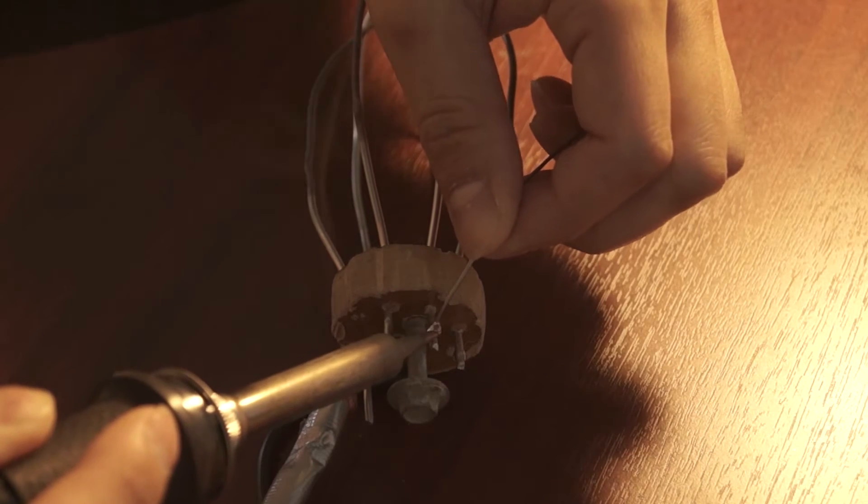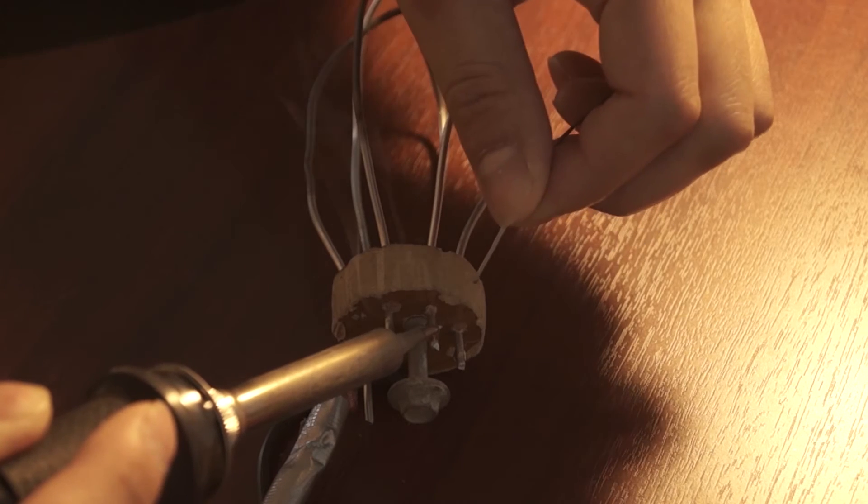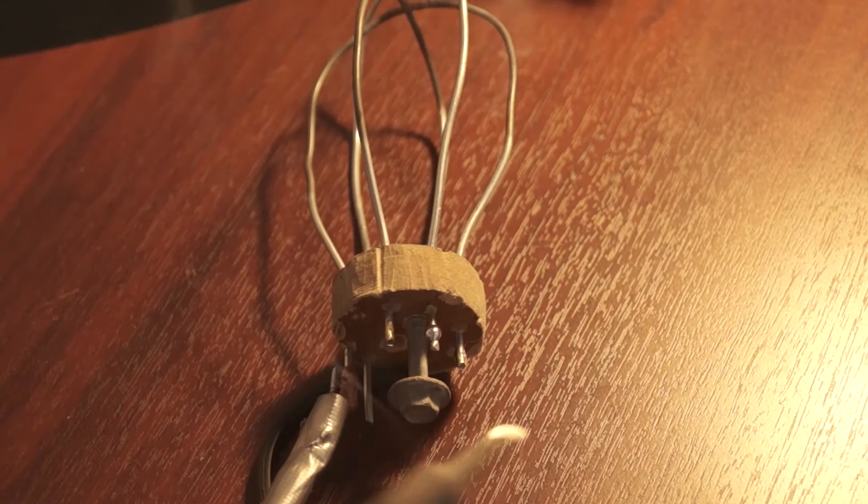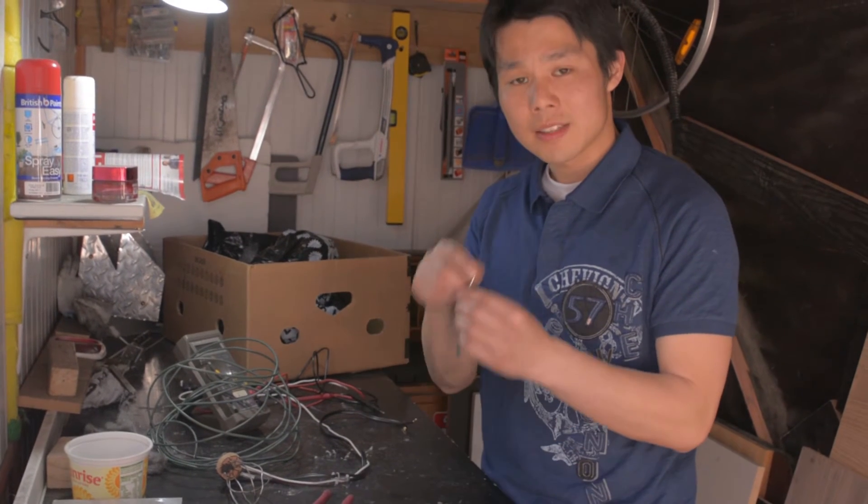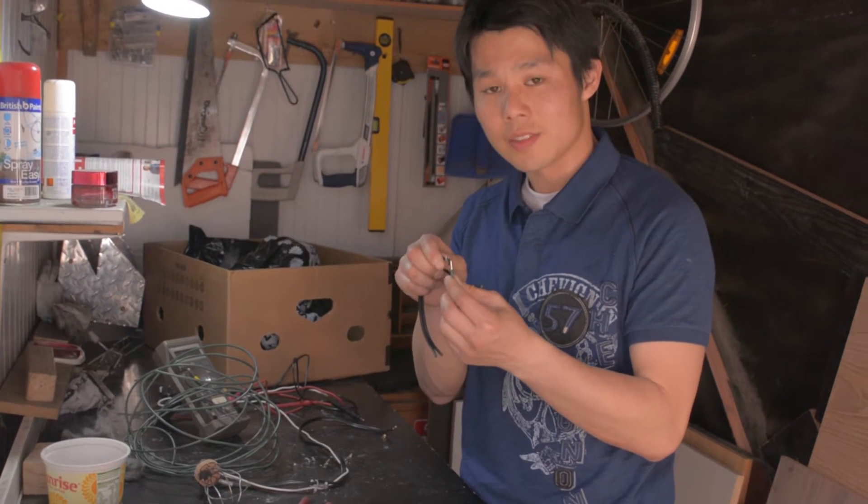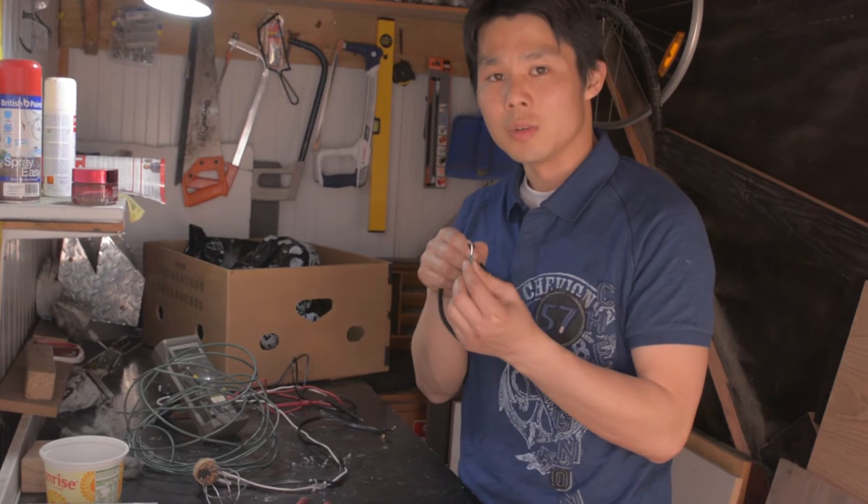Later on of course I discovered you can actually solder to steel and here's proof. Well I guess you learn something every day then, but I still recommend clamping the steel wire around the rubber sheathing of the electrical cable for a more durable connection.